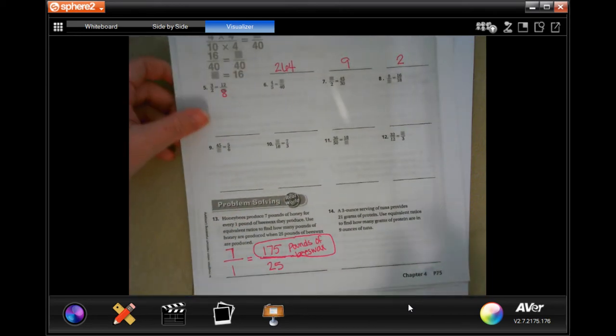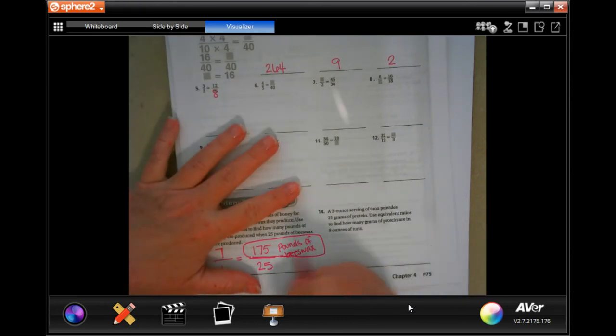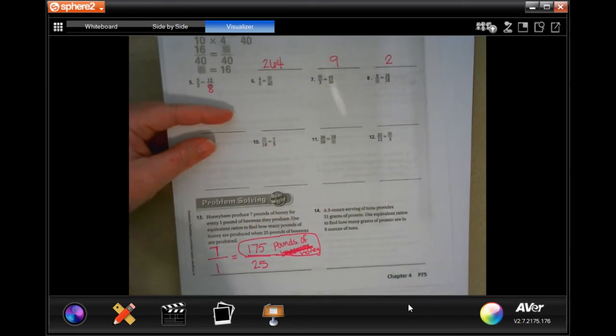7 times 5 is 35, period 3. 7 times 2 is 14, plus 3, 17, 175. So 175 pounds of honey. That's your answer, guys. Or sorry, of honey. Not beeswax honey. Bottom one was beeswax, top one was honey. Sorry about that, guys.